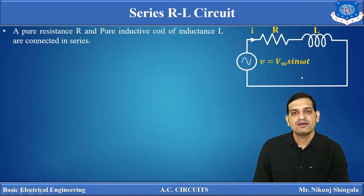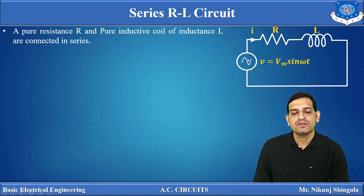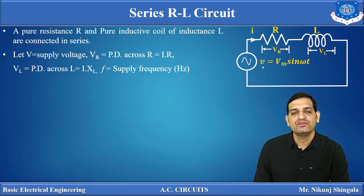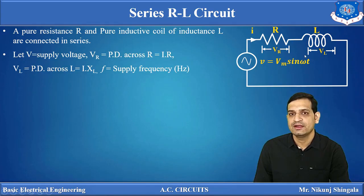Here you can see a circuit consisting of a series combination of a resistor and an inductor — a pure resistor and pure inductor connected in series. Across this series combination, one AC alternating voltage source V is connected. As the source is alternating, alternating current will start to flow, represented by small i, which is the RMS value of the current. The supply voltage is represented by V = Vm sin(ωt). As current i flows, there will be a potential difference across each component — Vr across the resistor and Vl across the inductor.